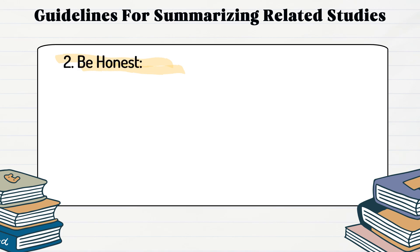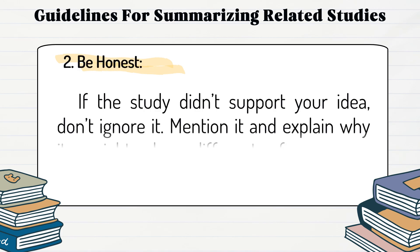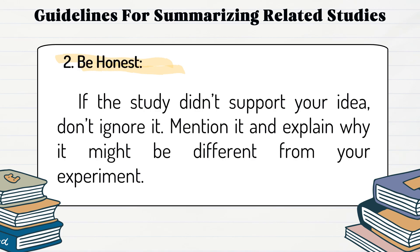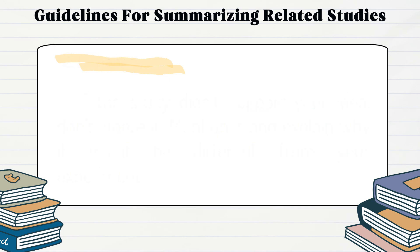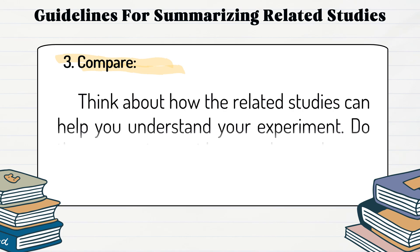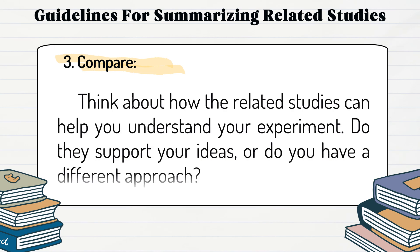Guideline two: be honest. If the study didn't support your idea, don't ignore it. Mention it and explain why it might be different from your experiment. Guideline three: compare. Think about how the related studies can help you understand your experiment. Do they support your ideas or do you have a different approach?